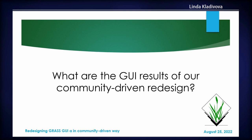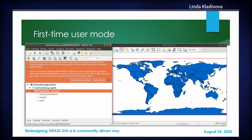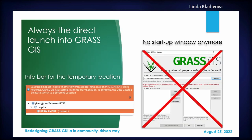What are the graphical user interface results of our community-driven redesign? We made a first-time user mode with an infobar — the idea is that you read the infobar message and first create a new location for your data. Then we removed the startup window entirely, so it's no longer present. You always start into some location, and when the previously used location is not available, you start in a temporary location.